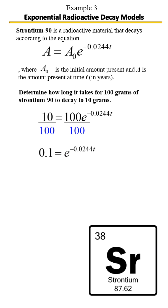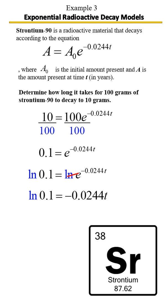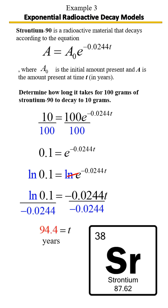Next, we're going to take the natural log of each side, because we want to get rid of the e — and that's the only way we're going to do that. ln and e cancel. The last step to solving for t: we divide by 0.0244. Whatever you do to one side, you do to the other. It will take approximately 94 years for it to go from 100 grams to 10 grams.